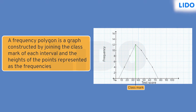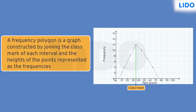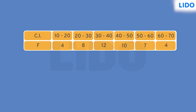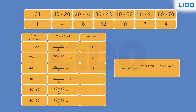Let's understand the steps of drawing a frequency polygon without a histogram using this example. The first step is to find the class mark of each class interval. Class mark is calculated by taking the mean of the upper limit and lower limit of the particular class. Thus, the class mark of the class 10 to 20 is 15, for the class 20 to 30 is 25, and so on.